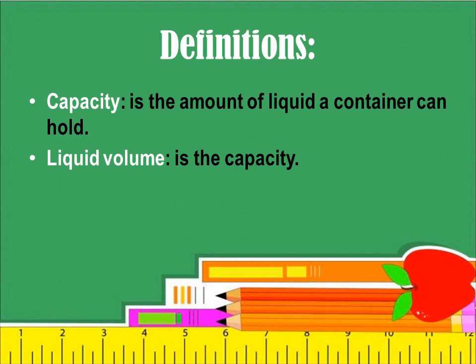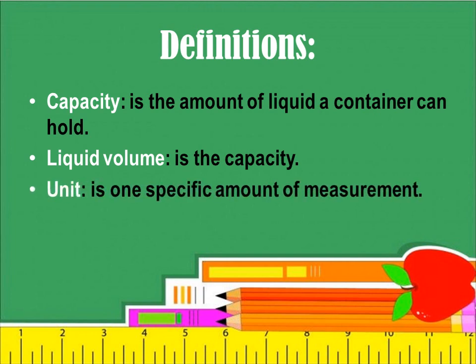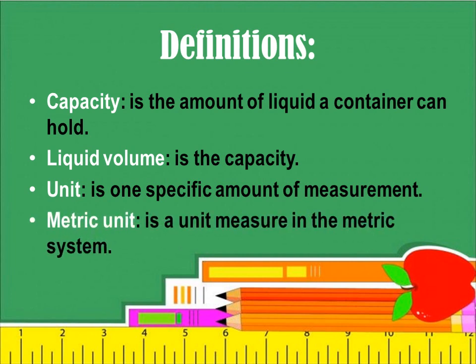Liquid volume is the capacity. A unit is one specific amount of a measurement, so each measurement has a specific unit. A metric unit is a unit measured in the metric system.